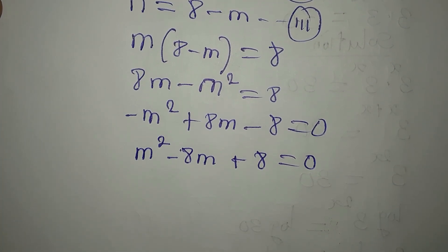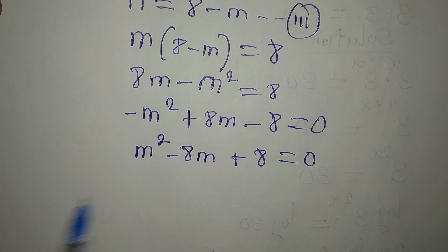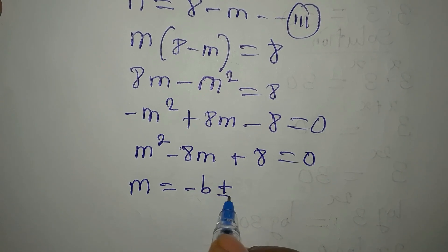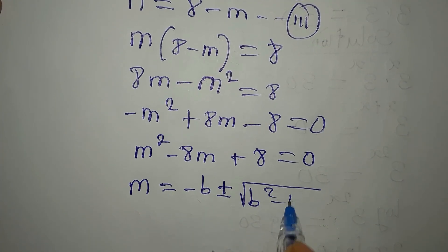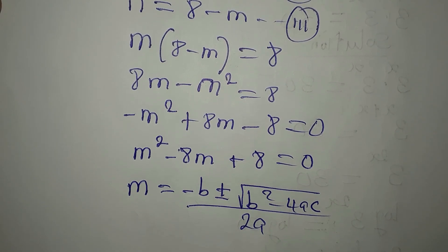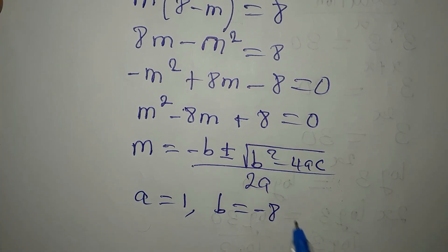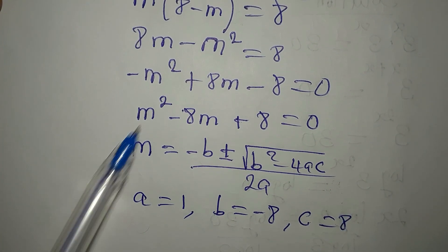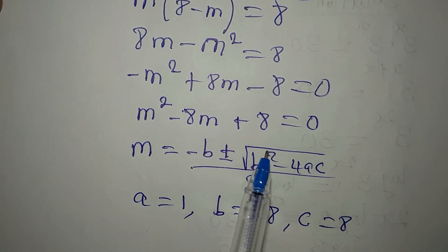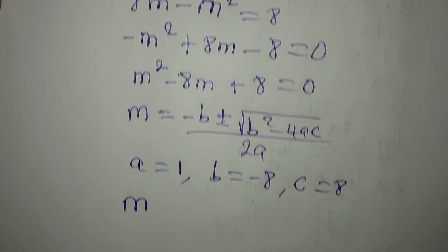From here we have a quadratic equation, and we will solve it using the formula: m equals minus b plus or minus square root of b squared minus 4ac, all over 2a. Our a is 1, b is minus 8, and c is 8. Here a is the coefficient of m squared, b is the coefficient of m, and c is the constant.